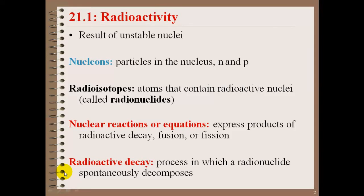In nuclear chemistry, we're going to be talking about radioactivity, which occurs because of unstable nuclei. Nucleons are particles in the nucleus, our neutrons and our protons. Radioisotopes are atoms that contain any radioactive nuclei. Nuclear reactions or equations will express the products of radioactive decay, fusion or fission. With nuclear chemistry, we are focusing on the chemistry of the nucleus of these atoms and how they change over time.